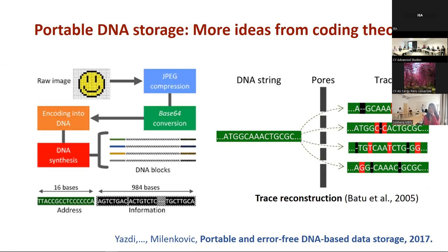A string can go through multiple pores. Since you always have thousands of copies of the same string, one copy may go through one pore and get certain errors — this G was deleted, this C was deleted. Another copy goes through a different pore and those two other symbols get deleted. So you get what computer scientists call traces of a string: multiple copies with different random deletions at the output.